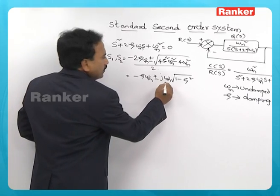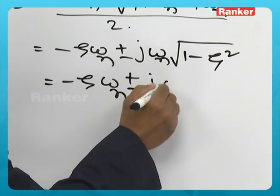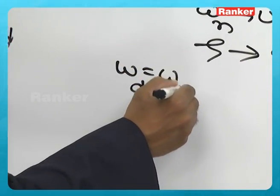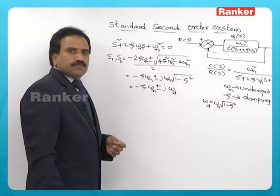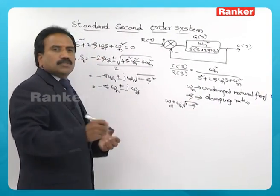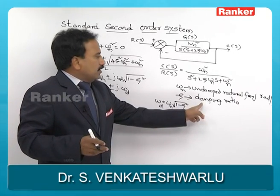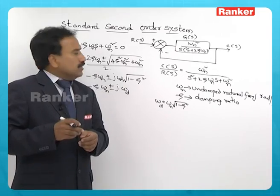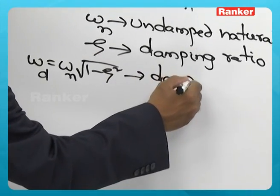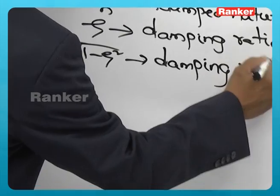This imaginary part is actually minus zeta omega n plus or minus j omega d, where omega d equals omega n root of 1 minus zeta square. Omega n is the undamped natural frequency of the system. The system may have some oscillations without any damping factor, that's why it's called undamped natural frequency. Whereas omega d is known as damped natural frequency because damping factor or damping ratio exists in the equation.